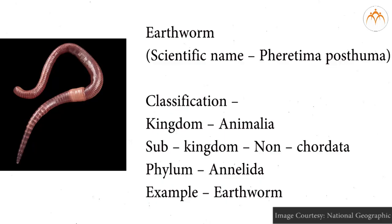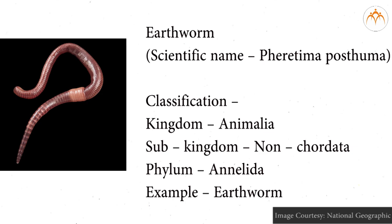The nerve cord is solid and paired. Earthworm Classification: Kingdom Animalia, Sub-kingdom Non-caudata, Phylum Annelida. Example: earthworm.